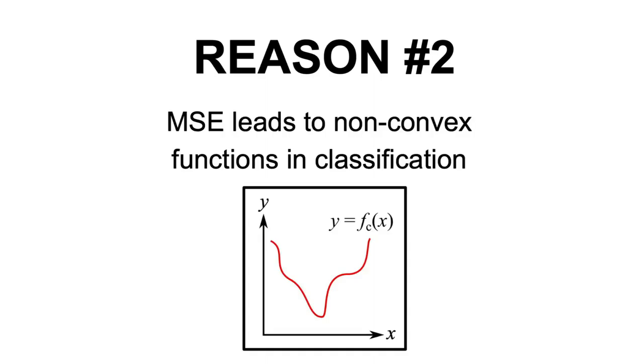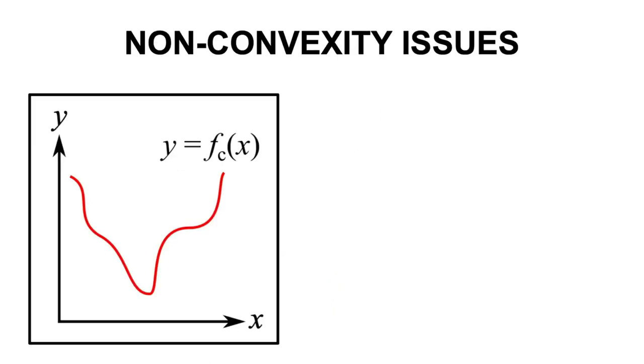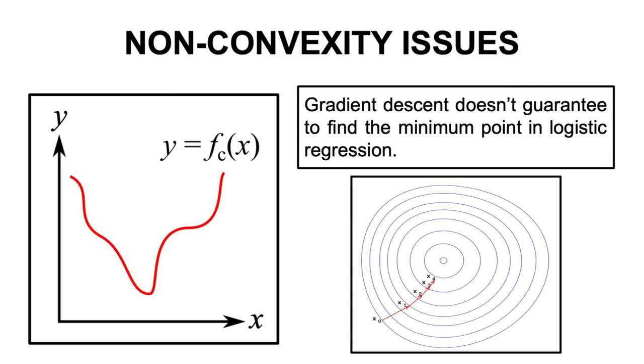Now, let's move to reason number two of why using MSE for classification may be a bad idea, namely that the mean squared error loss function is non-convex for classification problems. In simple terms, this means that if a binary classification model is trained with MSE loss function using gradient descent, it is not guaranteed to minimize the cost function, and thus we may end up in a bad spot. If you are used to derivatives and the chain rule, the mathematical demonstration of this non-convexity is quite simple, so I will put it here very briefly in this video.